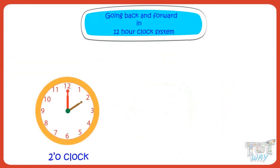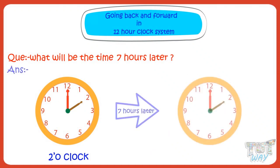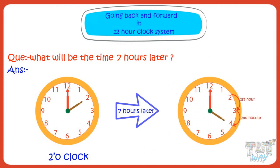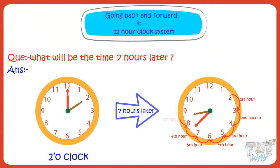Now, what will be the time seven hours later? In seven hours, the hour hand will move from 2 to 3, 3 to 4, 4 to 5, 5 to 6, 6 to 7, 7 to 8, and 8 to 9. As each hour passes, the minute hand will take one round of the clock. So it will be 9 o'clock after 7 hours.